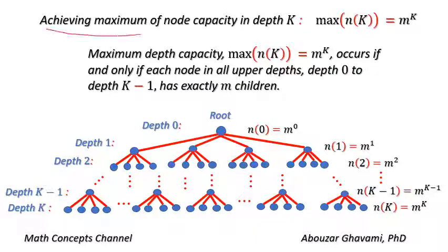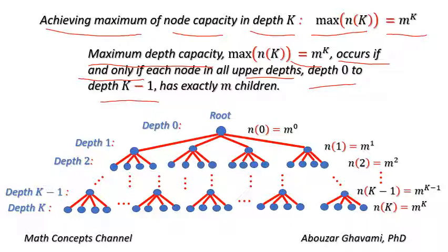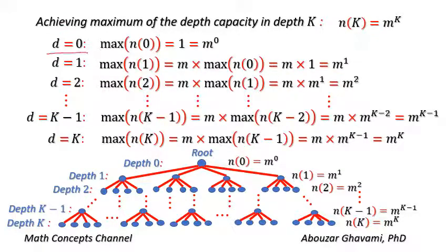Now we show how to achieve the maximum node capacity in depth K, which equals M to the power of K. Maximum depth capacity M to the power of K happens if and only if each node in all upper depths — depth 0 to depth K-1 — has exactly M children. There is only one node at depth 0, the root node. Thus, maximum number of nodes at depth 0 equals 1, which equals M to the power of 0. To achieve maximum capacity of depth 0, the root node must have exactly M children. In this case, maximum number of nodes at depth 1 equals M times 1, which equals M to the power of 1.